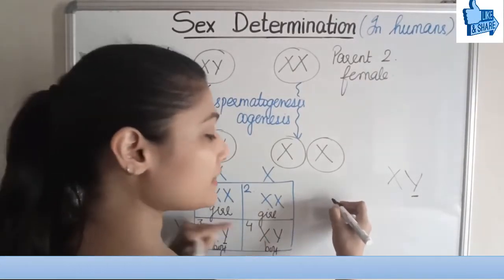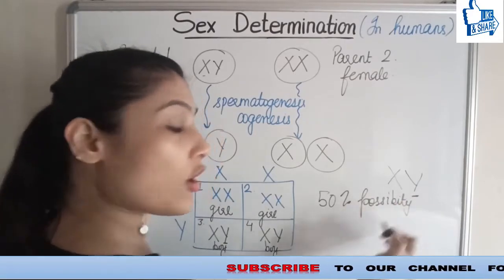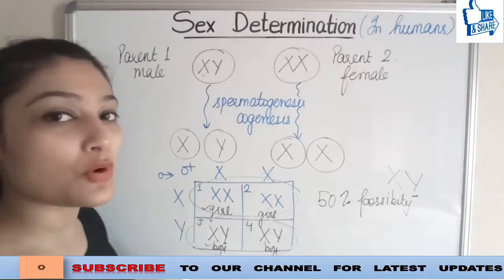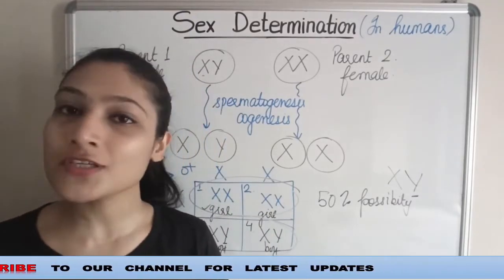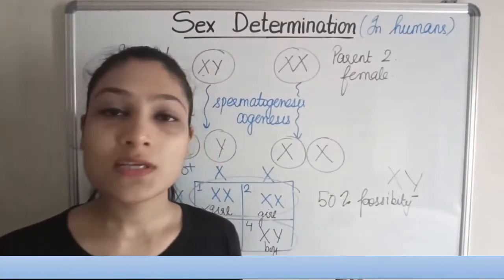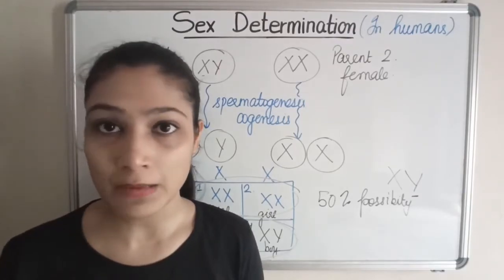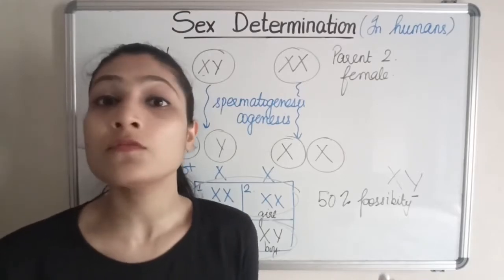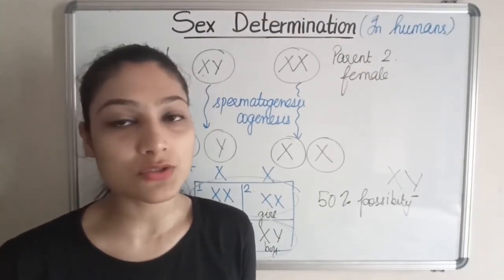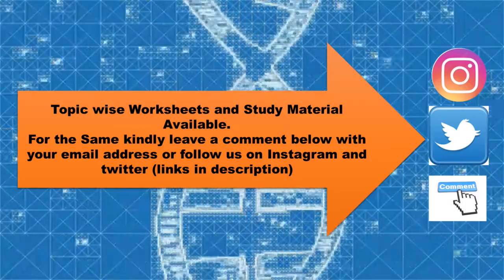So we can say there is a 50% possibility for a couple to have either a girl child or a boy child — there is a 50-50 chance. The conclusion of this topic is that it is the sperm that determines the genetic makeup of a baby. It is not the egg or the female that determines the gender of a child — it is the sperm. Also, topic-wise worksheets are available; kindly leave a comment in the comment section if you wish to avail them.